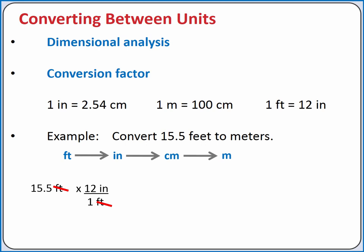Next, we want to cancel out our units of inches. Inches are in the numerator, so we need to multiply by a factor that has inches in the denominator. So we multiply by 2.54 centimeters divided by 1 inch.